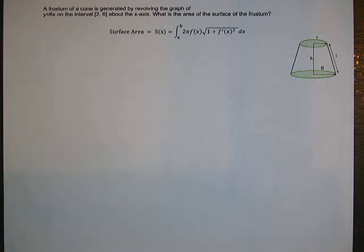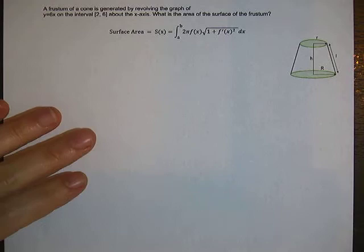A frustum of a cone is generated by revolving the graph of y equals 6x on the interval 2 to 6 about the x-axis. What is the area of the surface of the frustum?